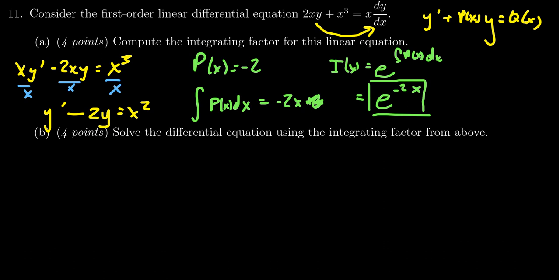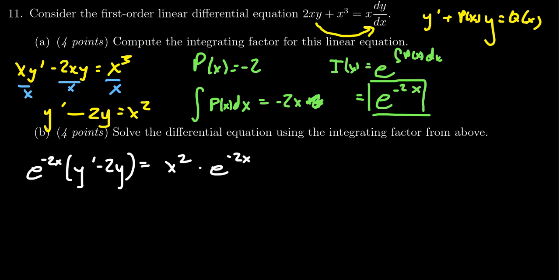Moving to part two, we take the equation from before — y prime minus 2y equals x squared — and multiply both sides by the integrating factor e to the negative 2x. On the left hand side, distributing gives e to the negative 2x times y prime minus 2e to the negative 2x times y. On the right hand side, we get x squared times e to the negative 2x.